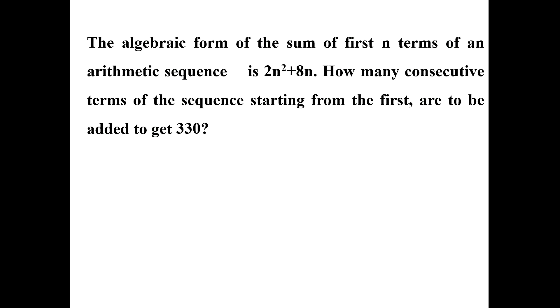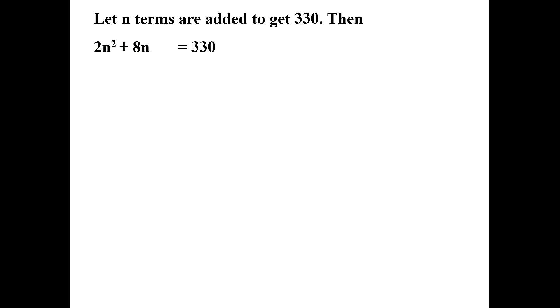The algebraic form of the sum of the first n terms of an arithmetic sequence is 2n squared plus 8n. How many consecutive terms starting from the first are to be added to get 330? This is a question from SSLC 2018 with a score of 3. We set 2n squared plus 8n equal to 330, giving a second degree equation.